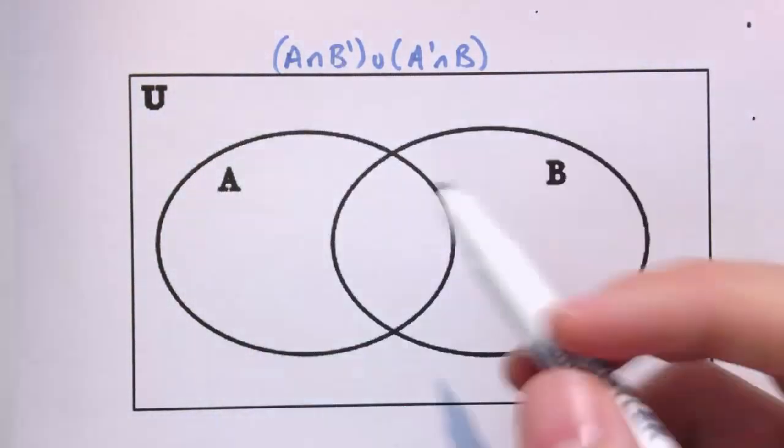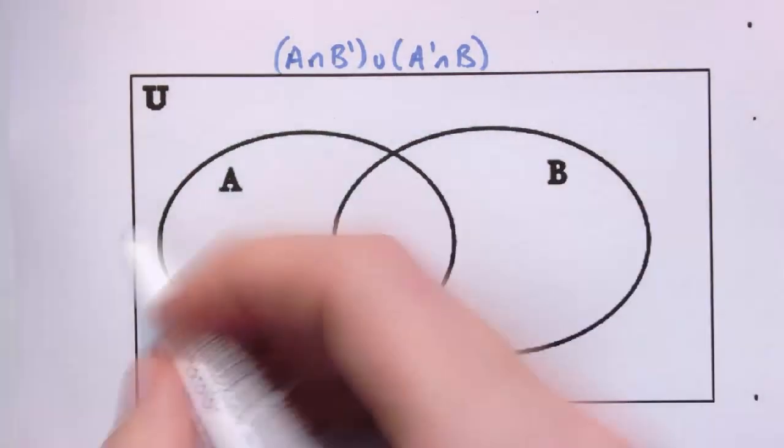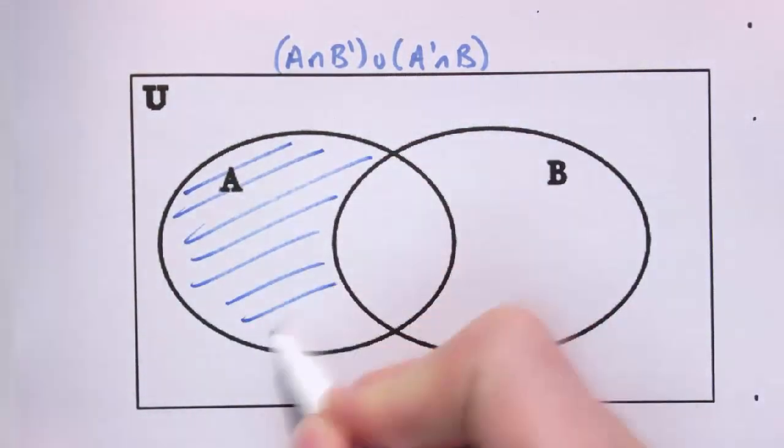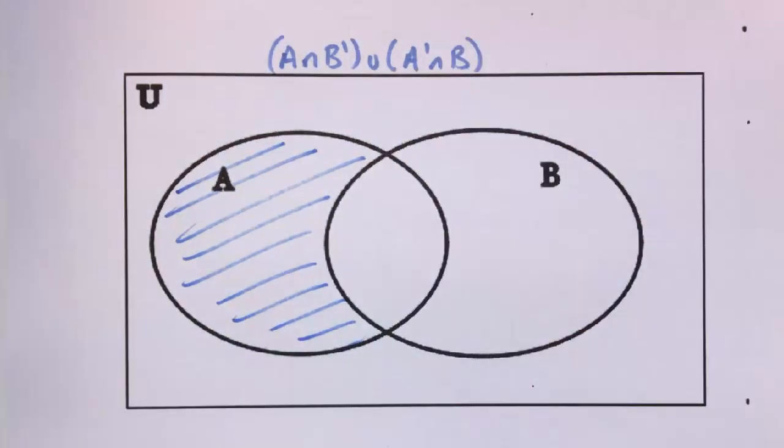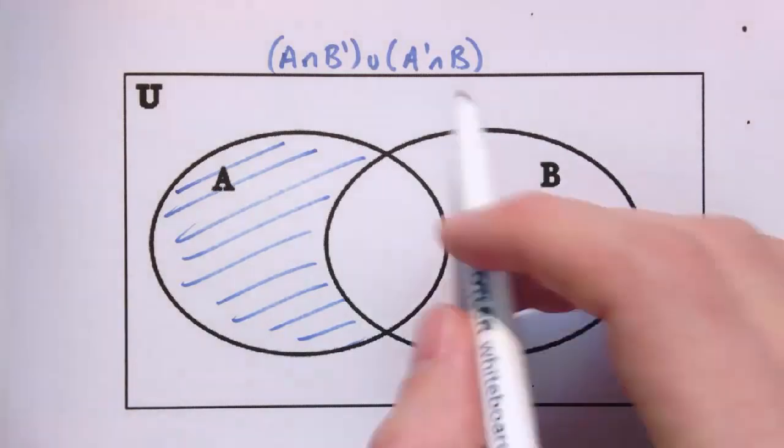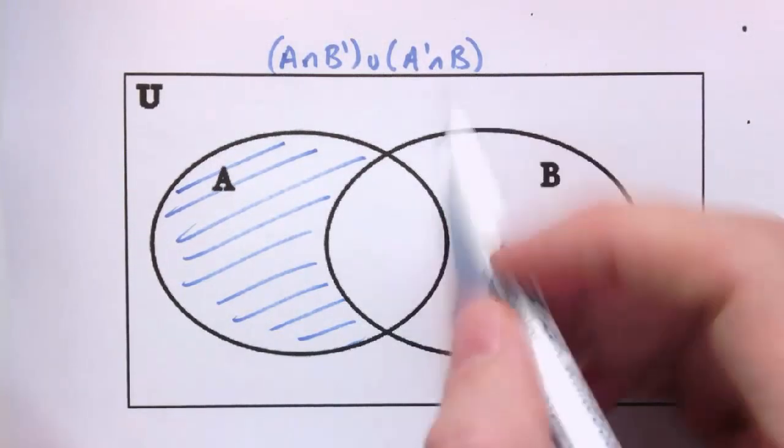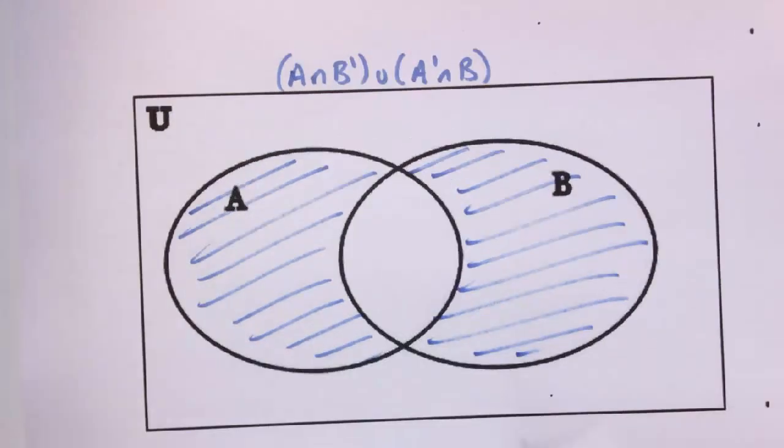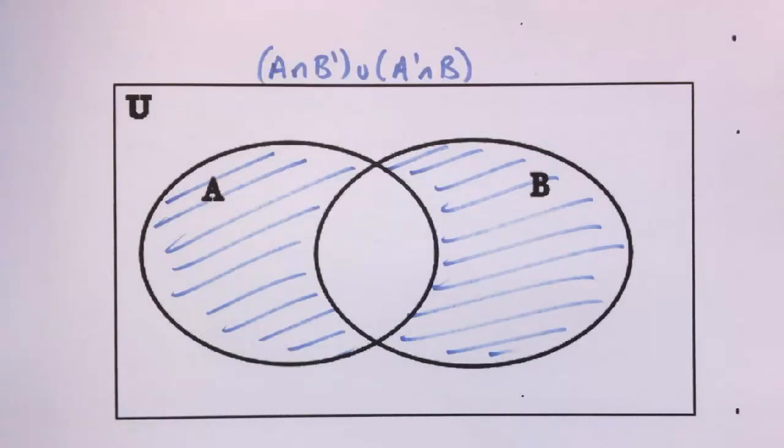So A and not B, that's things that are in A, but are not in B. So here we go, that's this set here, a bit like the one we did earlier. And in fact, the other half is exactly what we did earlier, which is not A and B. So things that are in B, but are not in A. It's that bit over here. So what we've shaded here must be the union of those two sets. This is something we might call exclusive OR.